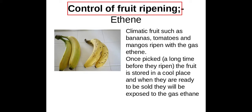They pick the fruit quite a while before it's due to be sold and then store it in a cool place. Once it's being transported to the country where it's going to be sold, towards the end of the journey it will be exposed to the gas ethene to allow the fruit to ripen.